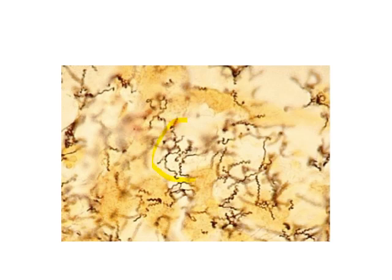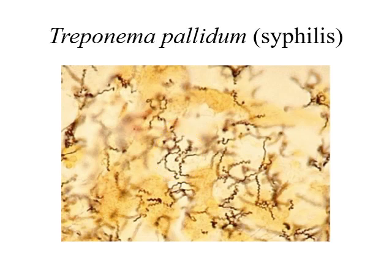These look squiggly. The question is: are they spirilla or spirochetes? To my eye these look very squiggly and very thin — I would say these are spirochetes. This is Treponema pallidum, which causes a sexually transmitted disease called syphilis. You need to memorize that syphilis is caused by Treponema pallidum, and that Treponema pallidum is a spirochete.